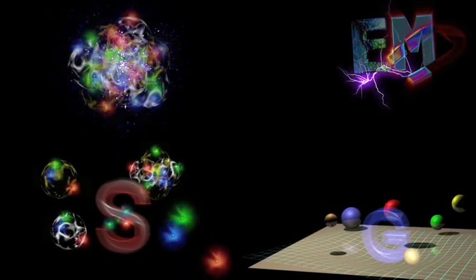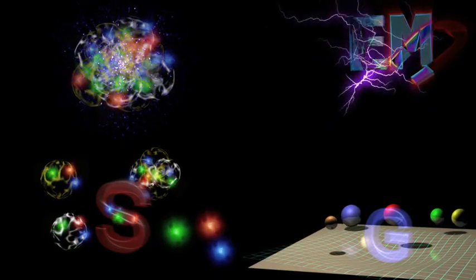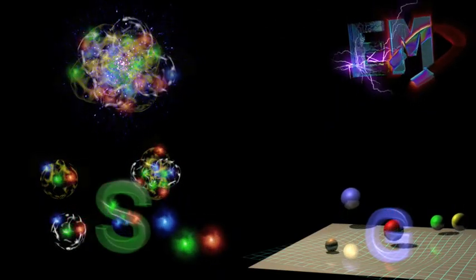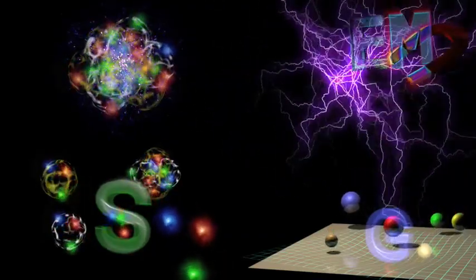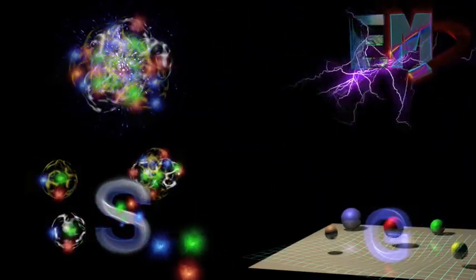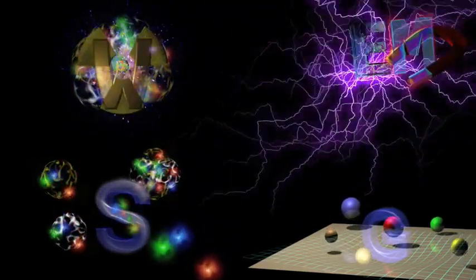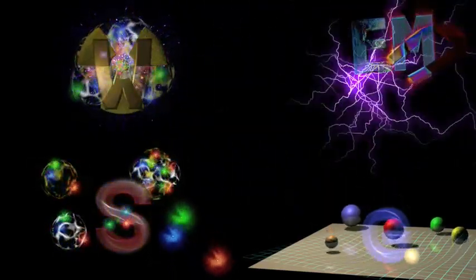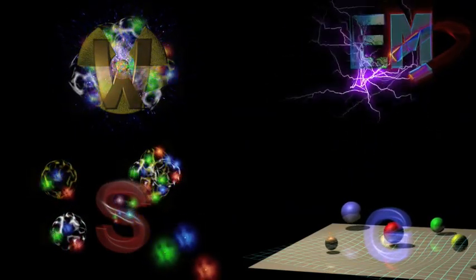A third force causes quarks to stick together in protons and neutrons, and a residuum of this force causes protons and neutrons to stick together in the nucleus of atoms. This force is called the strong force or sometimes the color force. The fourth force causes radioactivity and is called the weak force.